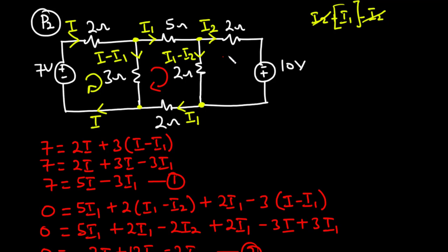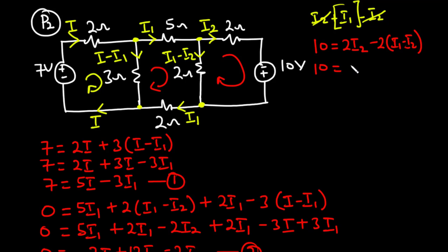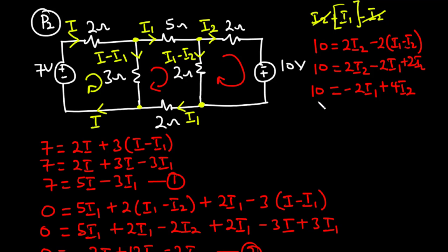For the third loop, taking the clockwise direction: 10 volts equals 2i2 (i2 moving clockwise) minus 2 times (i1 minus i2) since i1 minus i2 is moving anti-clockwise. Expanding: 10 equals 2i2 minus 2i1 plus 2i2, giving 10 equals negative 2i1 plus 4i2. Let's call this equation 3.